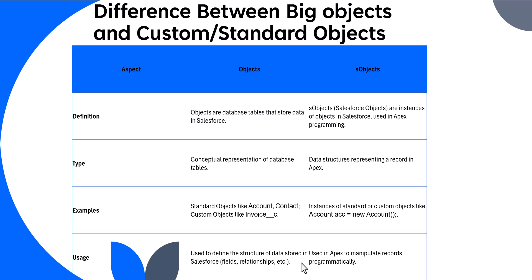Regarding access level: Big Objects are mostly read-only, while on S-Objects you can perform full CRUD operations — Create, Read, Update, and Delete. From a data retention viewpoint, Big Objects can archive historical data, while S-Objects hold operational and real-time data. In short, use S-Objects for real-time operations and Big Objects for storing vast amounts of historical data that you don't need to update frequently.